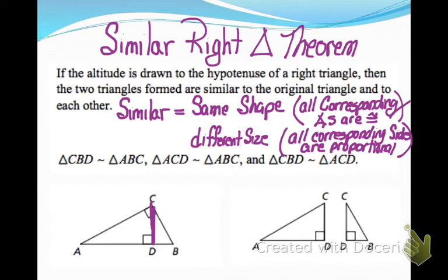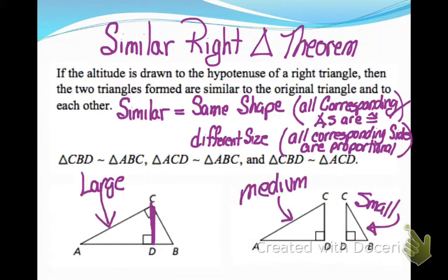When you're looking at this, you start off with one great big large triangle, and then when you drop that altitude you kind of end up with a medium and a small. So you can think papa bear, mama bear, baby bear triangles.